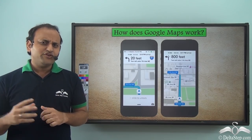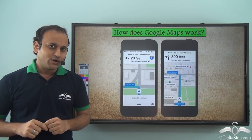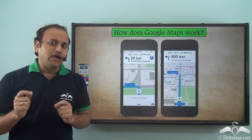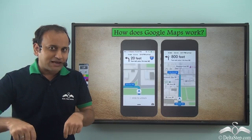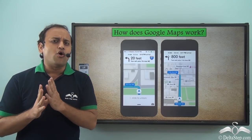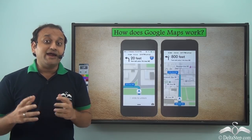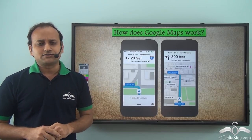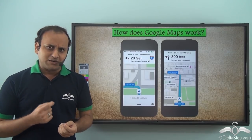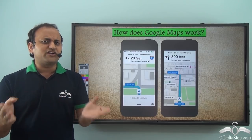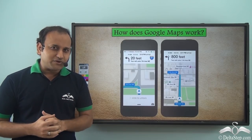Have you noticed whenever your parents want to visit a new place, what do they do first? They enter the address of that place in Google Maps, and as soon as they enter the address, Google gives them all the information about the place — how to reach there, where it is located, which are the nearest landmarks, which road to take, which turn to take.